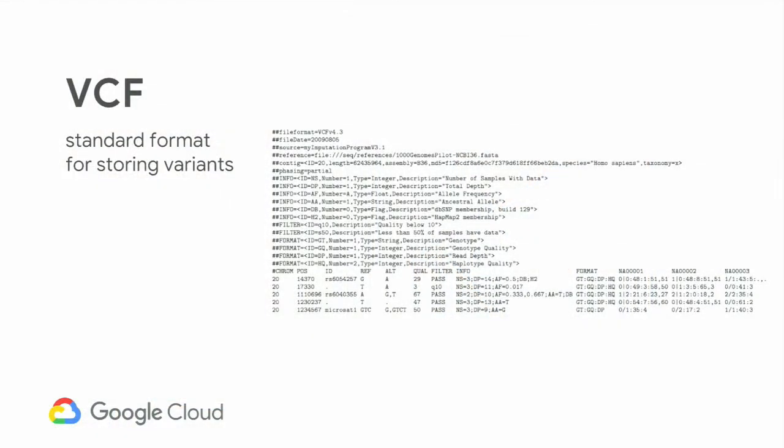But the challenge is, how do you get genomic variants into BigQuery? As you know, they are stored in VCF files, which is essentially a tab-delimited text file, and it's not as easy for databases to understand.